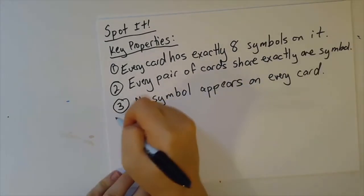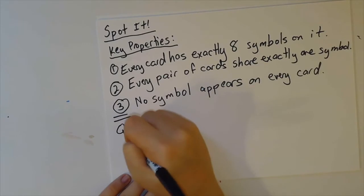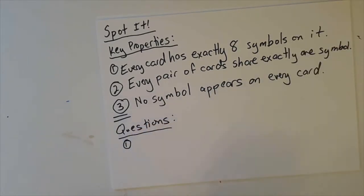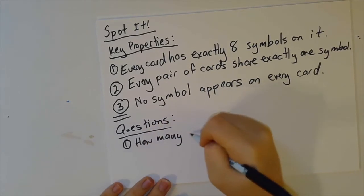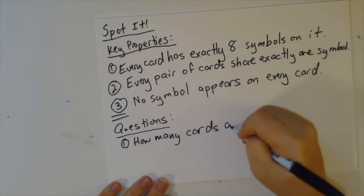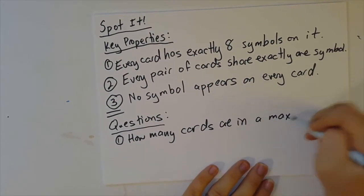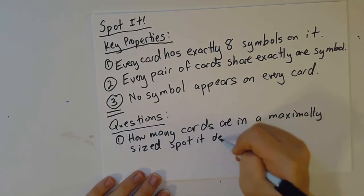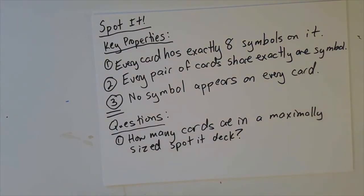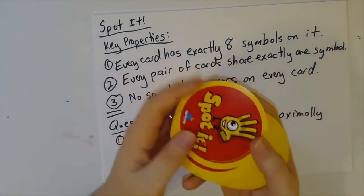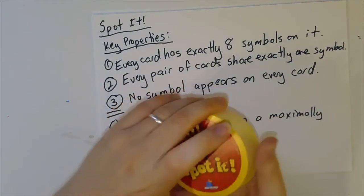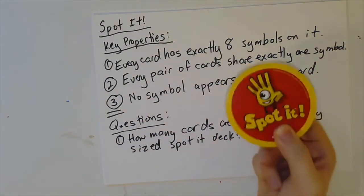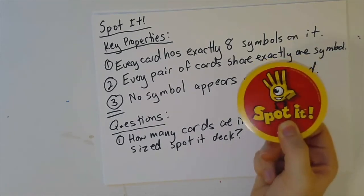So here are some questions that we'd like to answer. These will be our goals this week. First of all, we want to answer how many cards are in a maximally sized Spot It deck. So I did tell you that this deck, the one that you can buy, and by the way, you can buy these with any combination of symbols. So if you like sports teams or various other sorts of things, they sell all kinds of versions of this game. This has 55 cards, and I believe every version of Spot It that you can buy has 55 cards. Spoiler, 55 is not the maximum number of cards that you could put in a Spot It deck.